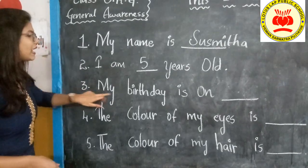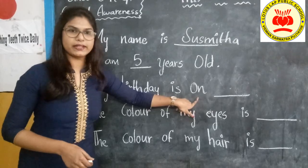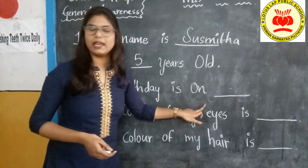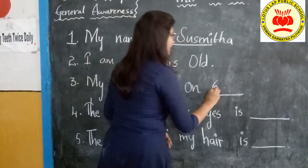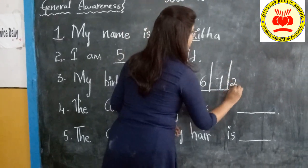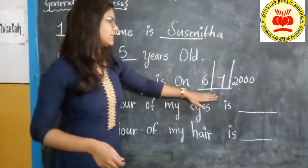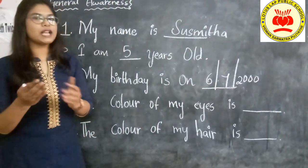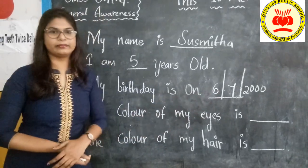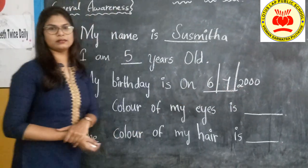Next, third point — my birthday is on. You know your date of birth. If you don't know, ask your parents. They will help you out. My birthday is on 6th July 2000, for example. You ask your parents and find out your birth date and try to fill it in. My birthday is on 6th July 2000.